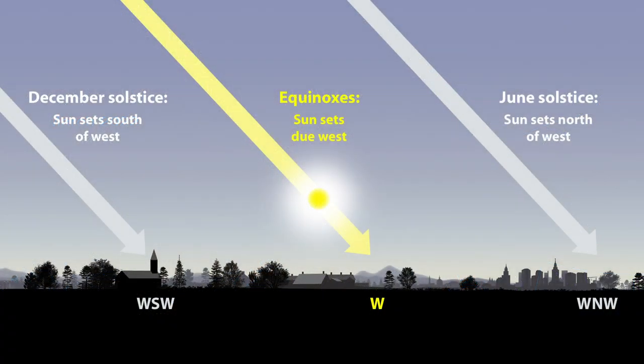When I hear March, I automatically think equinox. This month, it occurs on the 20th at 11:33 a.m. Eastern Time. Maybe you've heard this called the vernal or spring equinox because it signals the beginning of astronomical spring in the Northern Hemisphere.